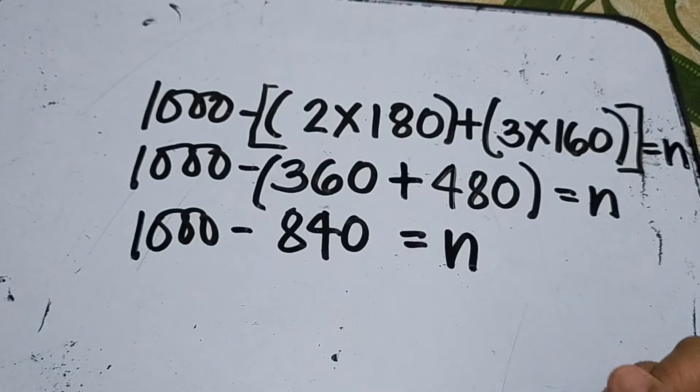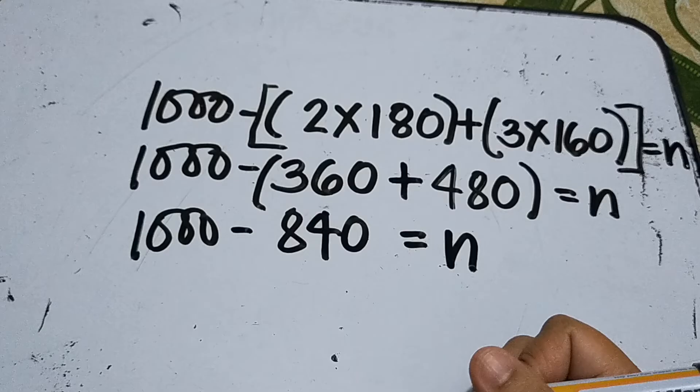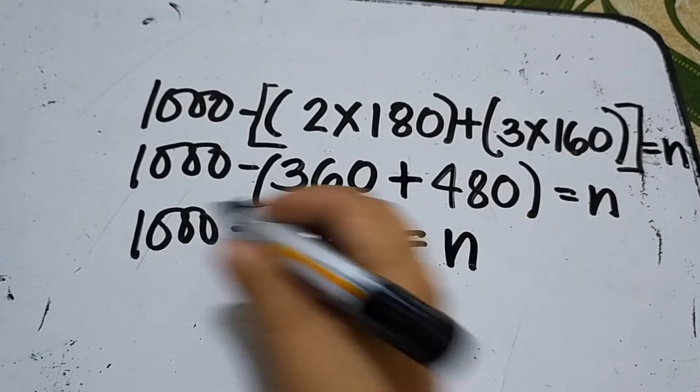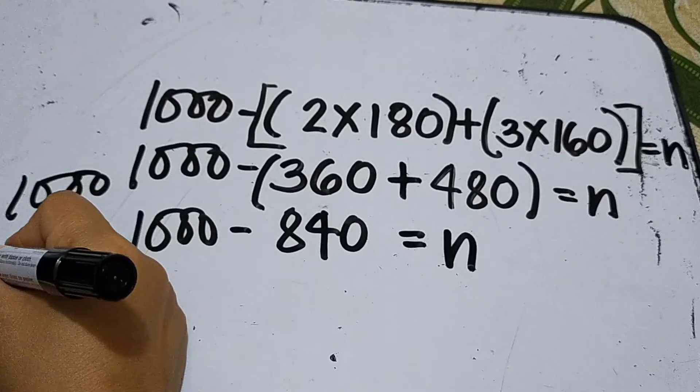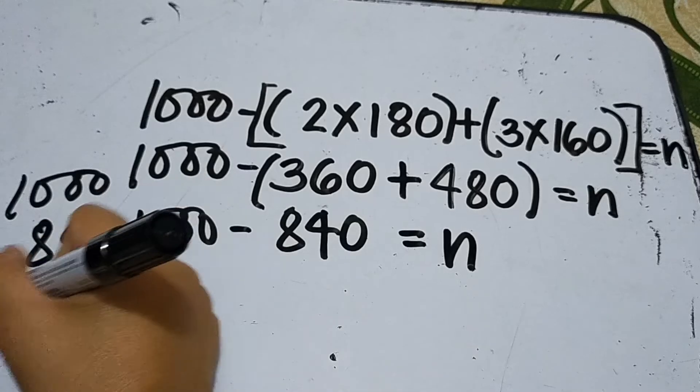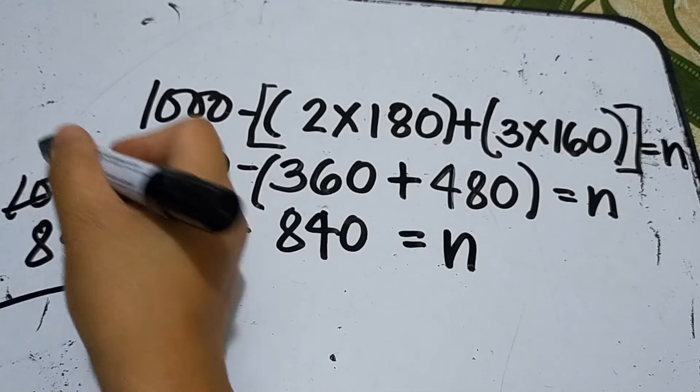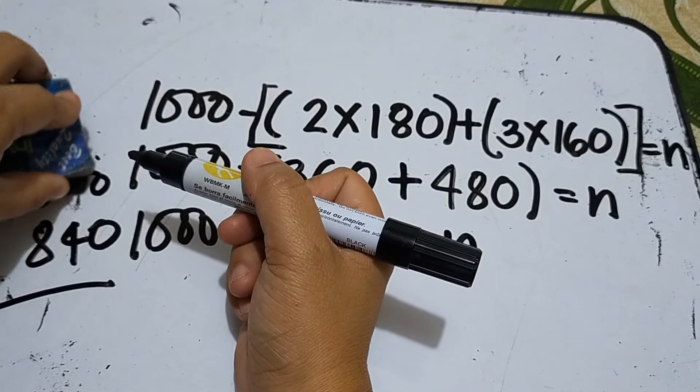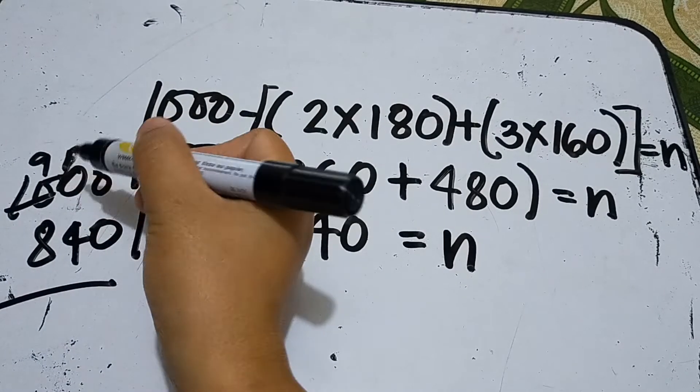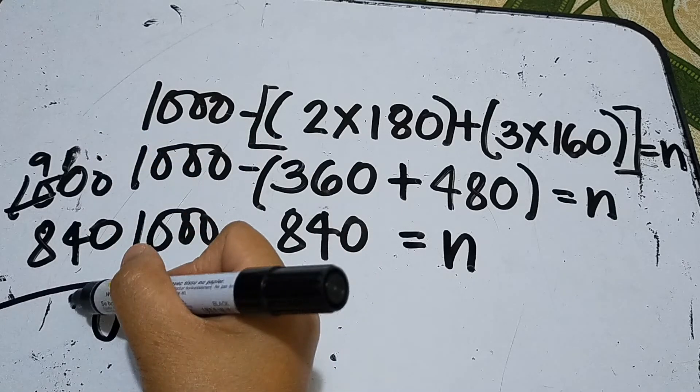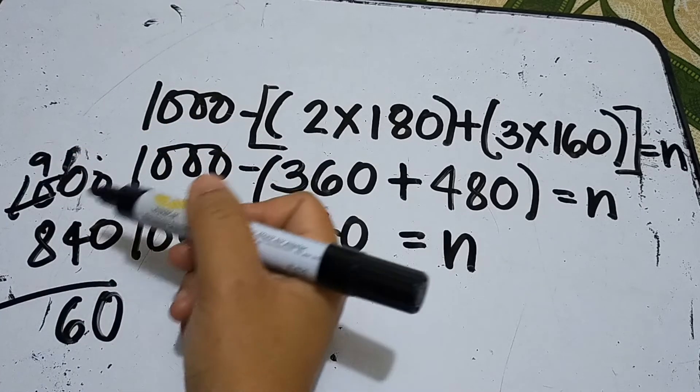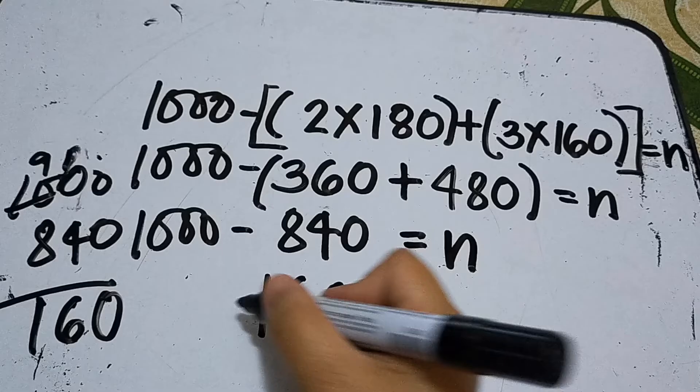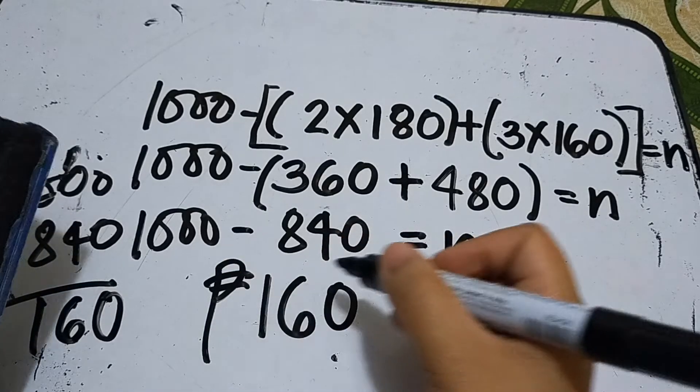Then afterwards, subtract 840 from 1,000. If you can do it mentally, that's fine. If not, scratch it out here: 1,000 minus 840. We need to borrow here. Actually, we don't need to borrow from this zero because it's already zero. So this becomes 10. 0 minus 0 is 0, 10 minus 4 is 6, 9 minus 8 is 1. The answer is 160 pesos.